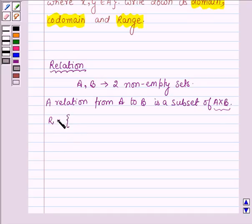So the relation R, which is the subset of the Cartesian product A cross B, is derived by describing a relationship as ordered pair X, Y such that X belongs to A and Y belongs to B.